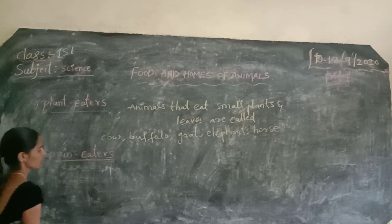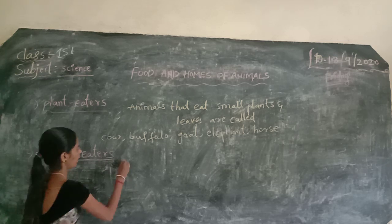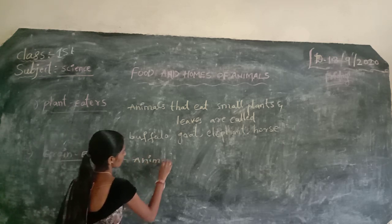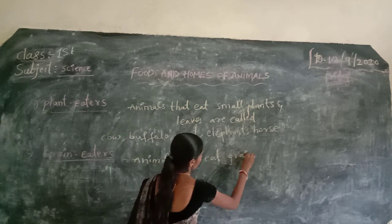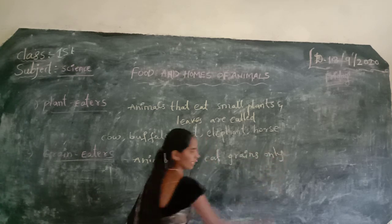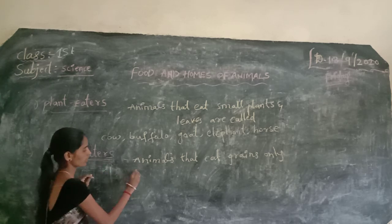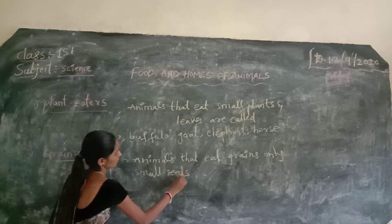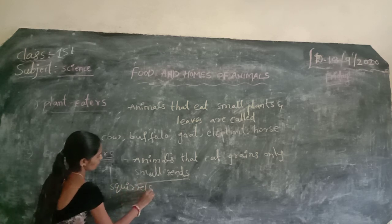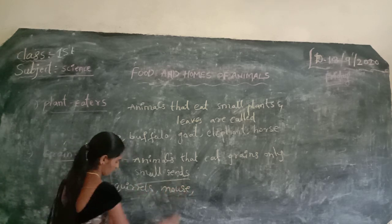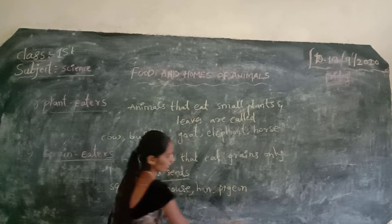Next, grain eaters. Some animals eat grains only and are called grain eaters. For example, squirrel, mouse, hen, pigeon — these are grain eaters.